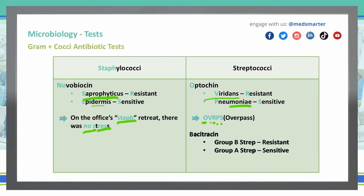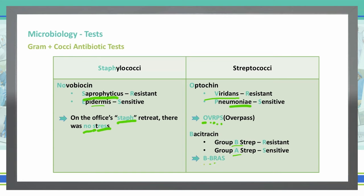We have another test we can do: the bacitracin test. If you have resistance to bacitracin, we're dealing with Group B strep. And if you have sensitivity to bacitracin, we're dealing with Group A strep. The mnemonic to remember this is B-BRAS — B for bacitracin, B is resistant, A is sensitive. So bacitracin: Group B resistant, Group A sensitive.